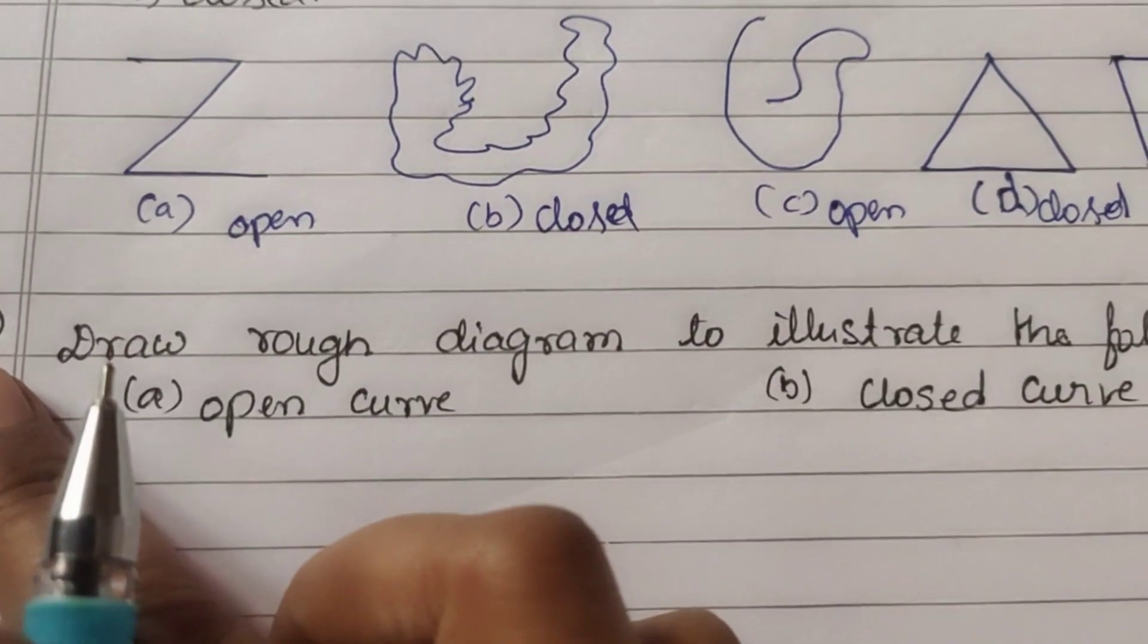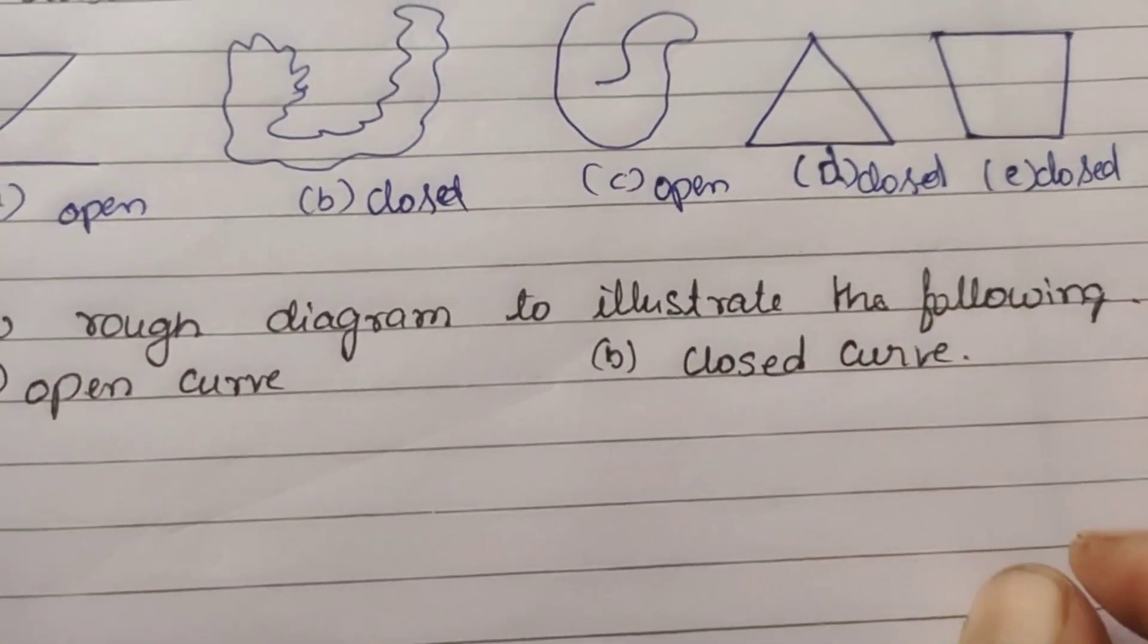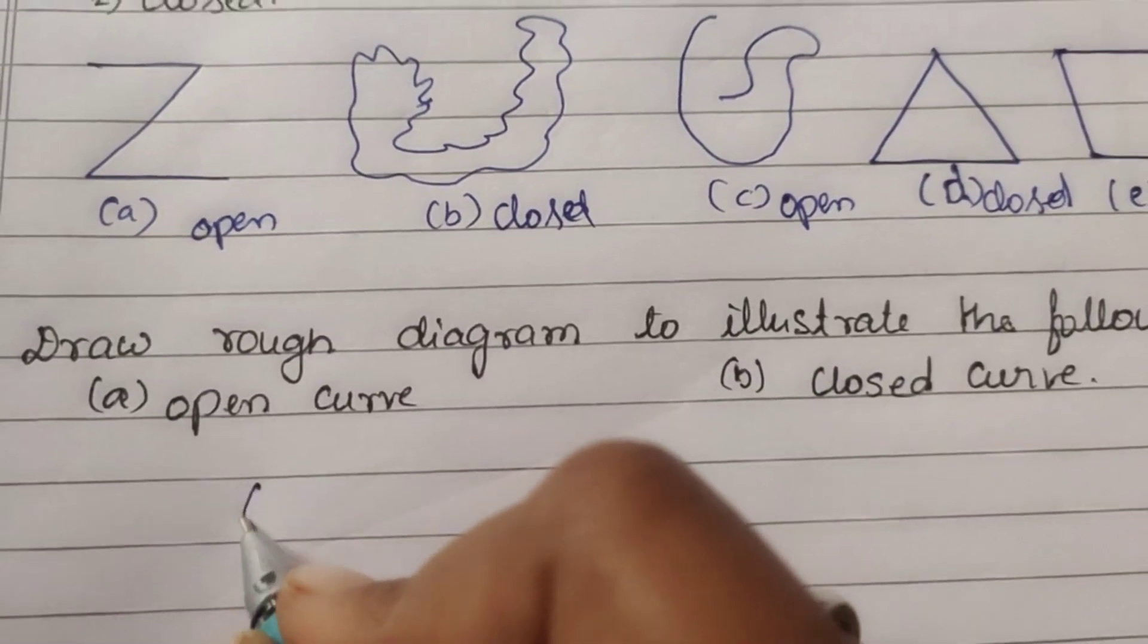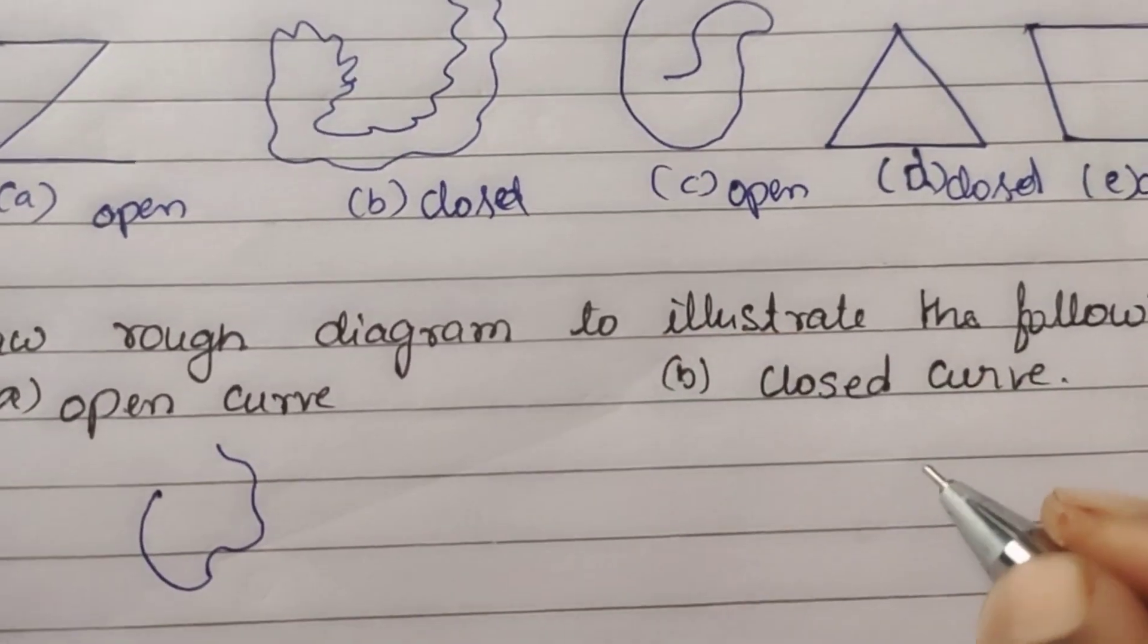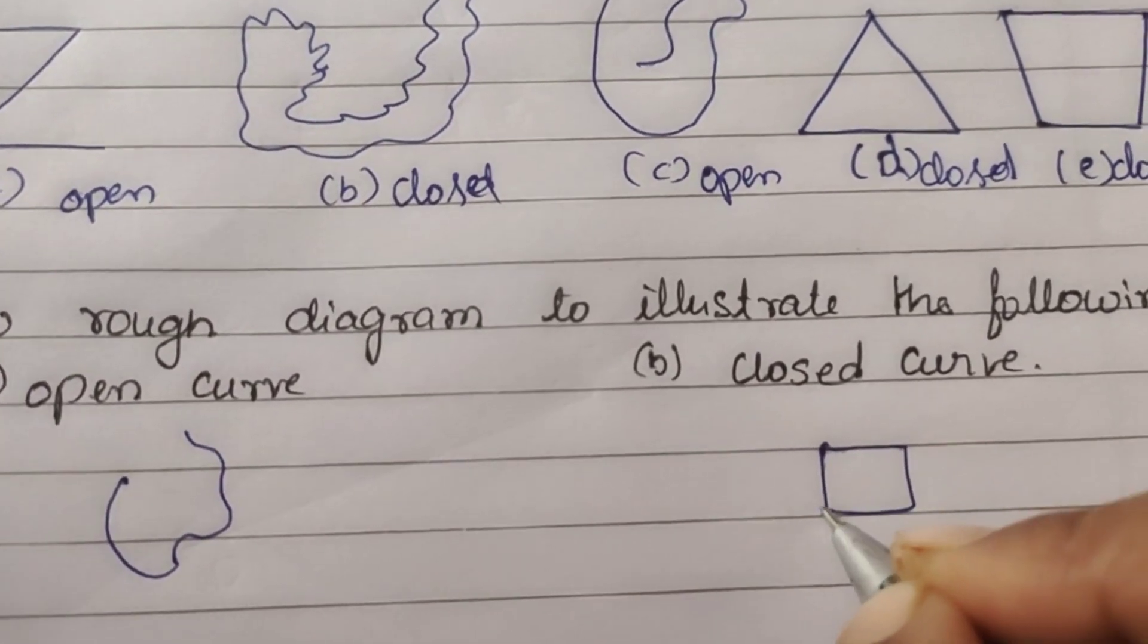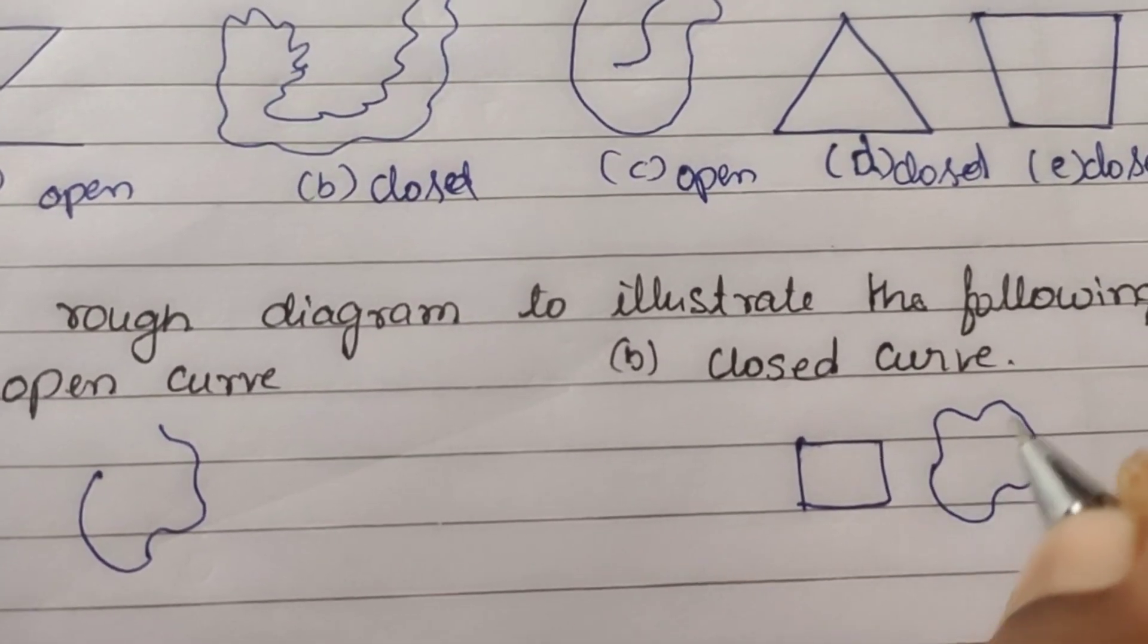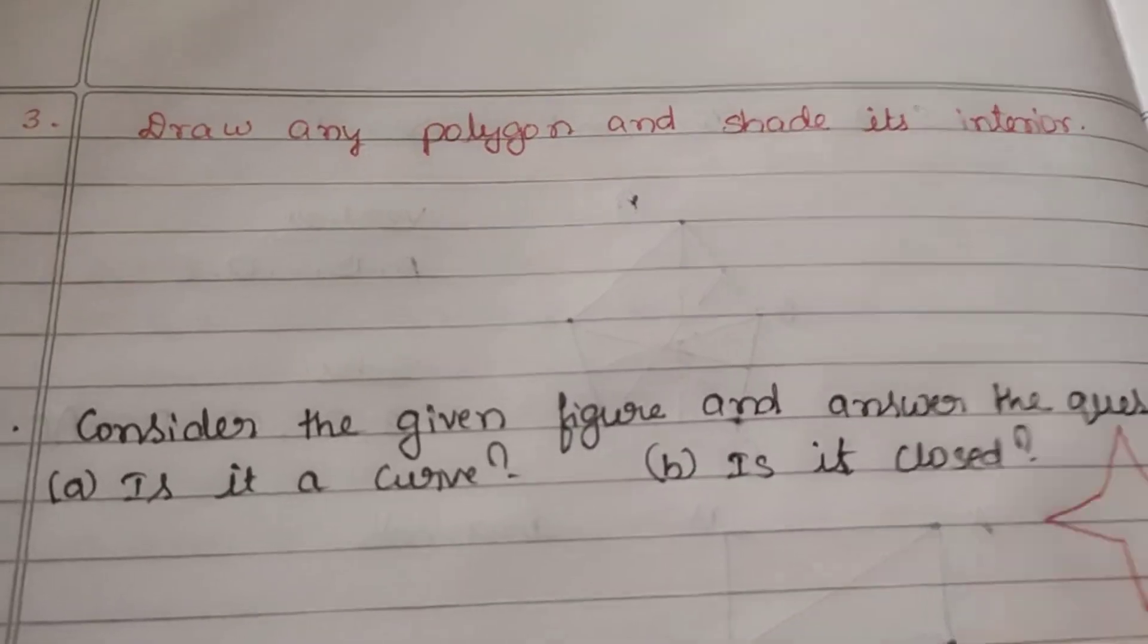Second question: Draw rough diagram to illustrate the following - open curve and closed curve. Open curve can be any curve like this. This is open curve. Closed curve can be rectangle, square, or any closed figure. This is closed. Third question: Draw any polygon and shade its interior.